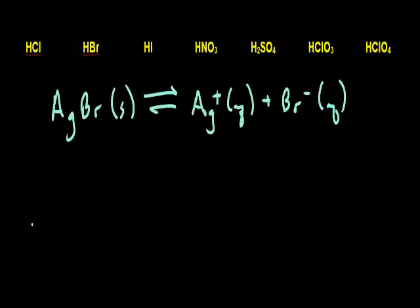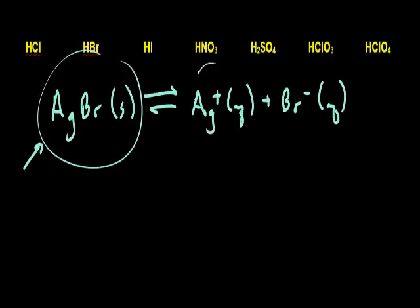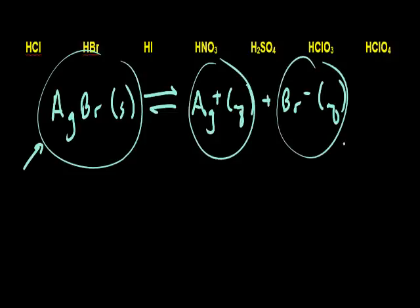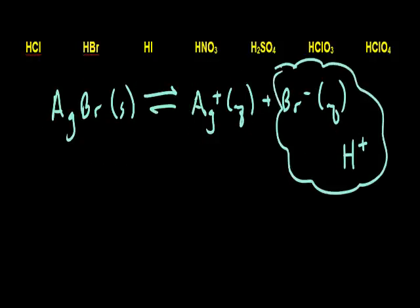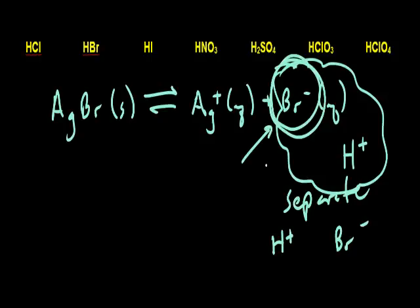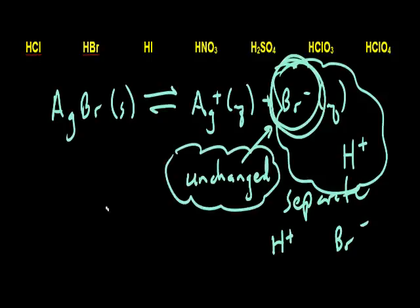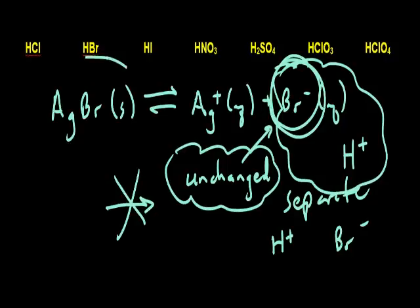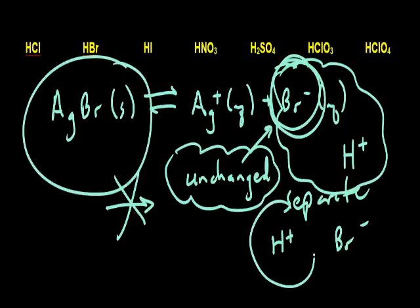Let's look at the saturated solution of silver bromide. We have our silver bromide solid in equilibrium with its aqueous silver ions and bromide ions. Now if we were to add acid — H+ ions — to this particular solution, when the H+ bumps into some bromide ions in the beaker, these ions are going to remain separate as H+ and Br− ions. Consequently, the Br− ion concentration remains unchanged, and because the Br− concentration is unchanged, the reaction does not shift at all. So silver bromide is a solid that's not going to dissolve upon the addition of acid.